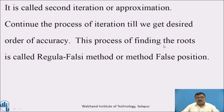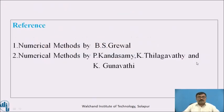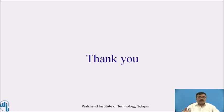Continue the process of iteration until we get the desired order of accuracy. This process of finding the roots is called the Regula Falsi method, or method of false position. Thank you.